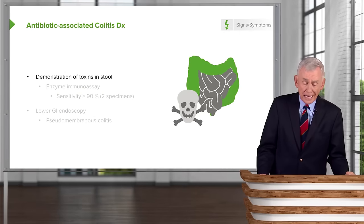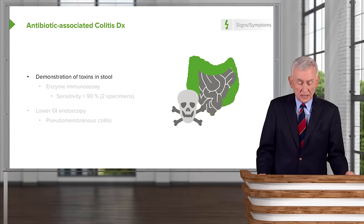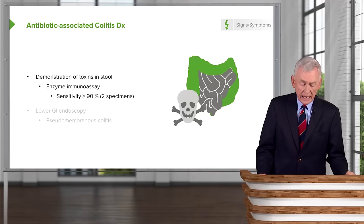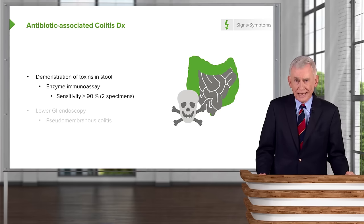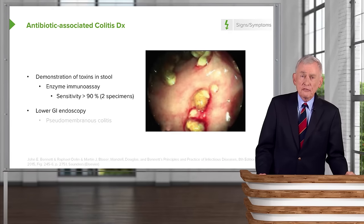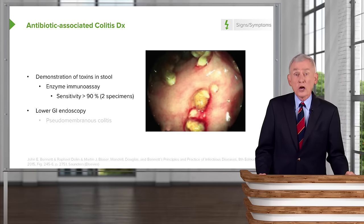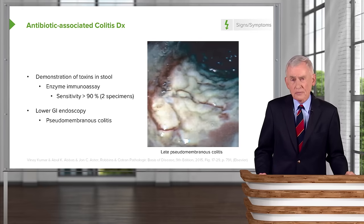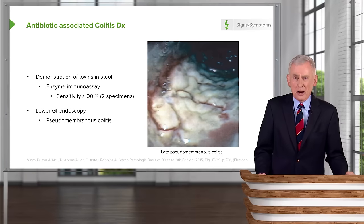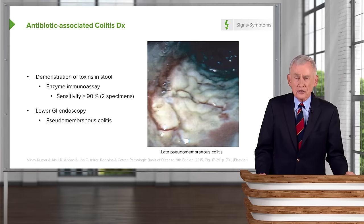How do you diagnose antibiotic-associated colitis? You must demonstrate that the toxins are in the stool, which we do using an enzyme immunoassay. We ordinarily submit two specimens — if you do that, the sensitivity is greater than 90%. If the diagnosis remains in doubt, or the patient is no better, it may be time to do a lower GI endoscopy. That's where we see pseudomembranous colitis — a very adherent pseudomembrane, not a real membrane, composed of white cells and sloughed mucosal epithelium.